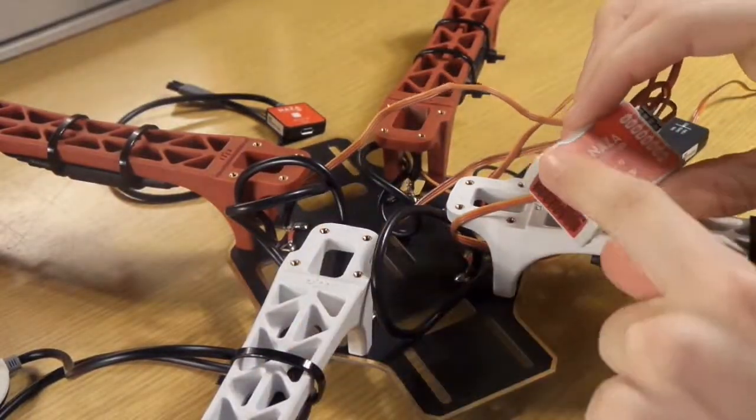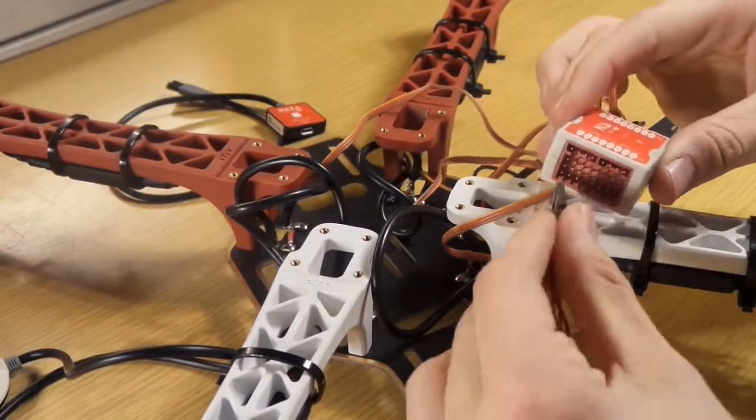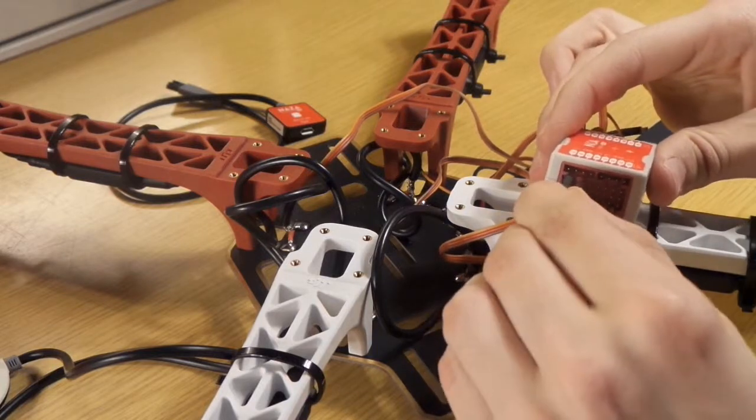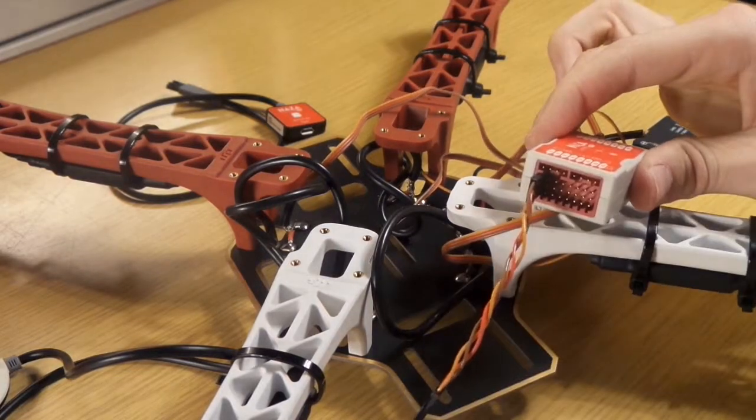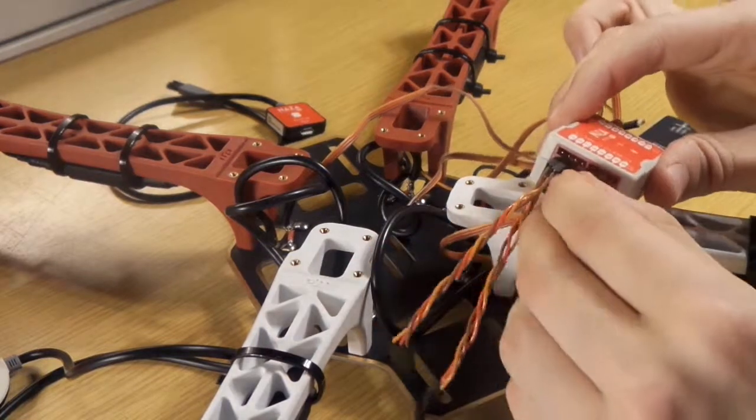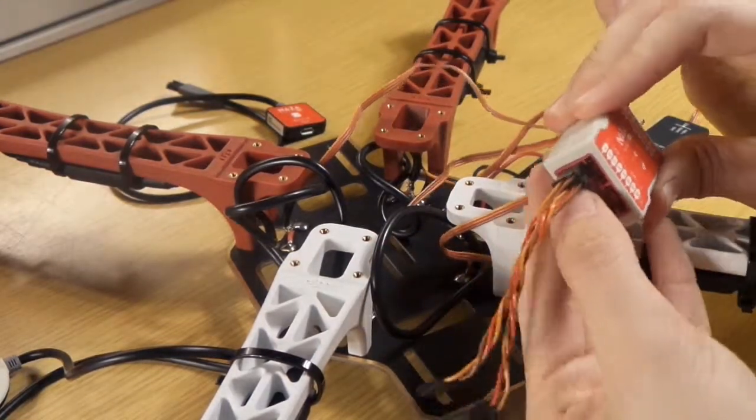Now we take the cables which go to the receiver and we put them onto the first 5 attaching points onto the other end of the NASA M flight controller.